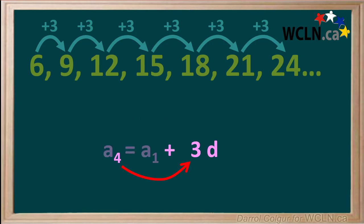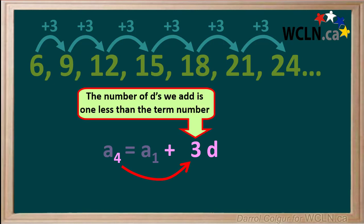And when the term number is 4, we add 3d's. So again, the number of d's we add is 1 less than the term number.